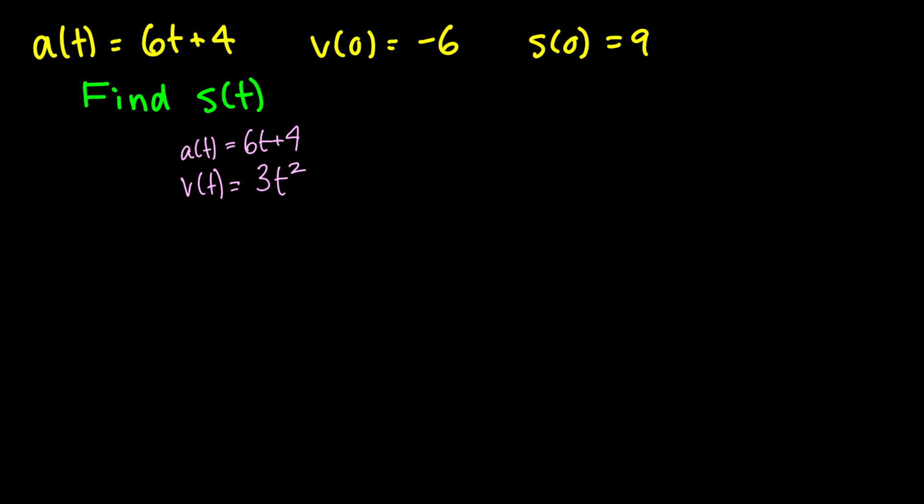Okay, now we're going to get plus 4t. Basically when we have a constant we just stick a variable in front of it and we have some constant C and we don't know what C is.